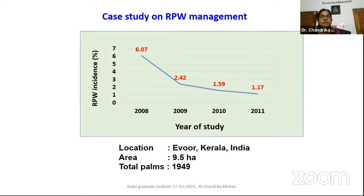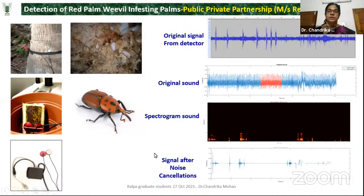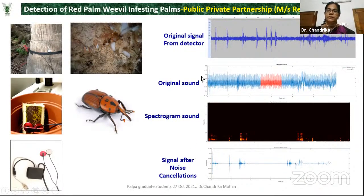In coconut, being a perennial crop, pest management also takes a lot of time. For a community approach and large area-wide demonstration, it takes at least two to three years for a sustainable result. The recent approach in red palm weevil management is a sensor-based electronic detector being developed with a private partnership. They developed a sound-based detector — a prototype is available but more validation has to be done.